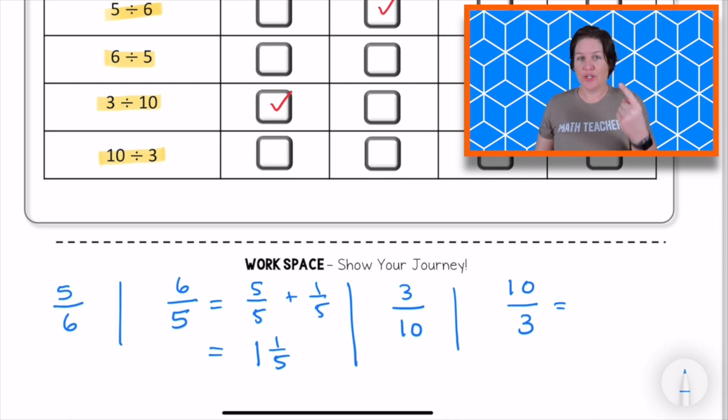Okay. So 10 thirds could be decomposed as 3 thirds plus 3 thirds, that would be 6 thirds, plus 3 thirds would be 9 thirds, plus 1 third. So 3 thirds plus 3 thirds plus 3 thirds plus 1 third does equal 10 thirds. So because of that,